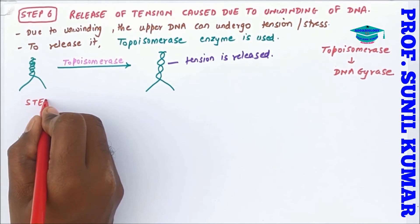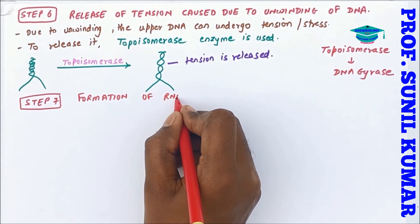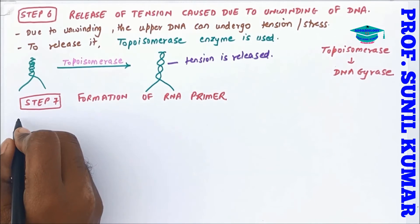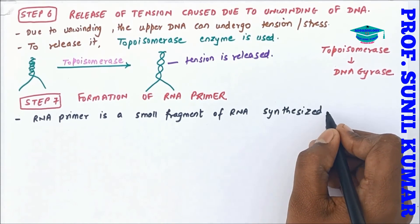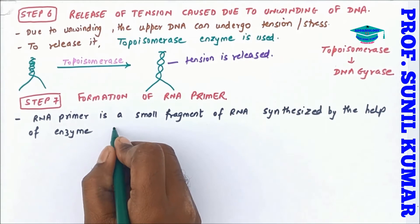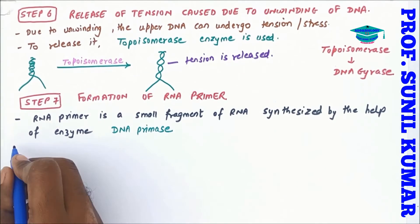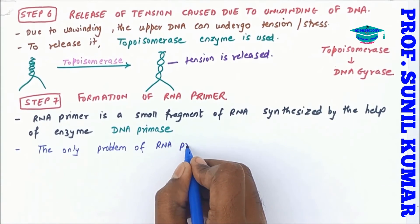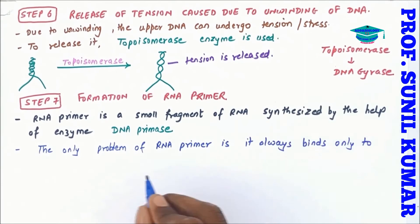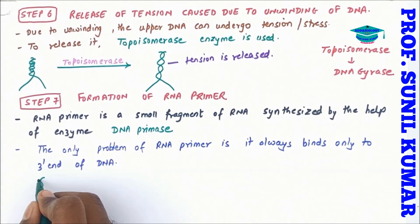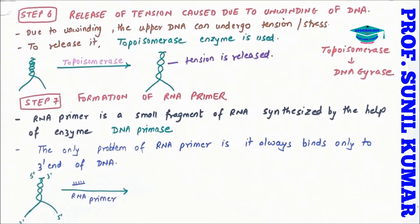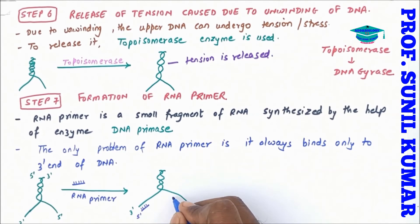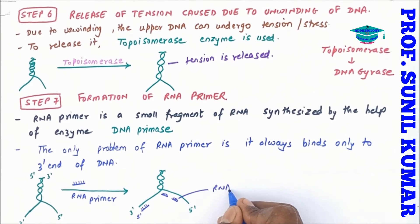Step seven is the formation of the RNA primer. A primer is a small fragment, so an RNA primer is a small fragment of RNA. It is synthesized by the enzyme DNA primase. The RNA primer binds only at the 3-prime end of the DNA template. On one template strand the 3-prime end is easily available, so the RNA primer binds there. On the other template, it can bind at multiple places.